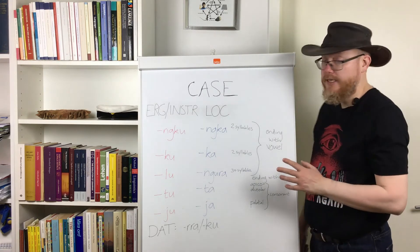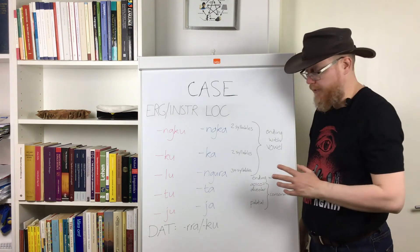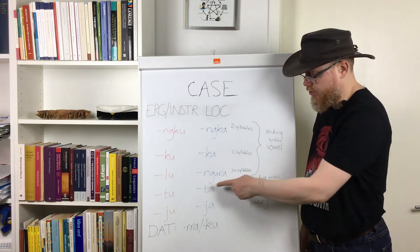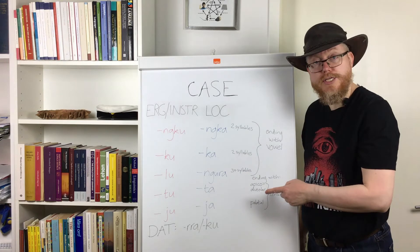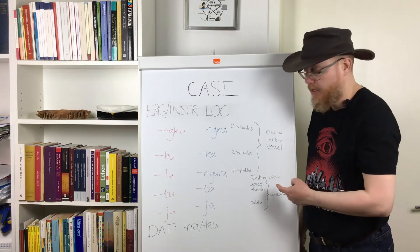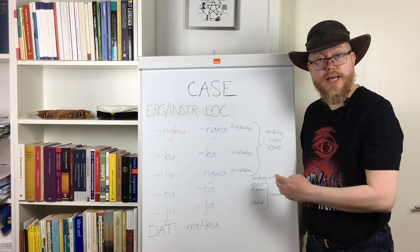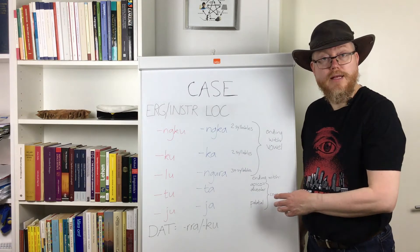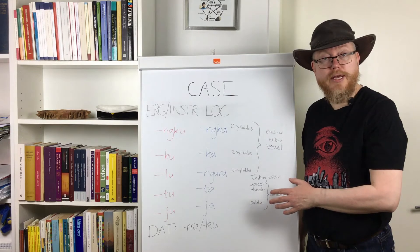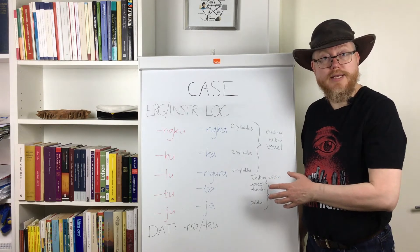Looking at these allomorphs, I think we'll start from the bottom with the marginal ones. We have 'du-ta', which attaches to nouns that end in an apico-alveolar consonant, and 'du-ja', attaching to nouns that end in a palatal consonant. Why are these marginal? Well, they are marginal because only about 10% of all nouns in the language end in a consonant.